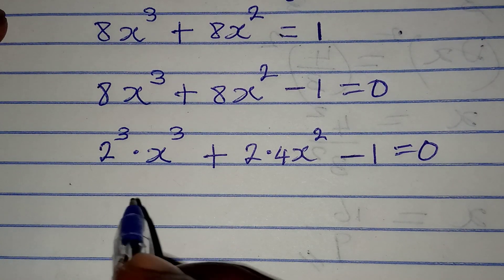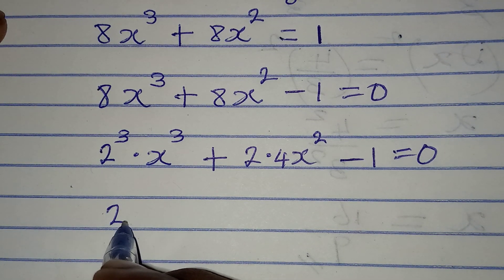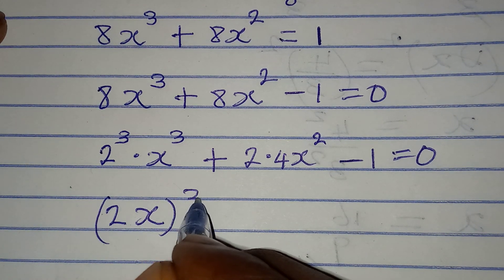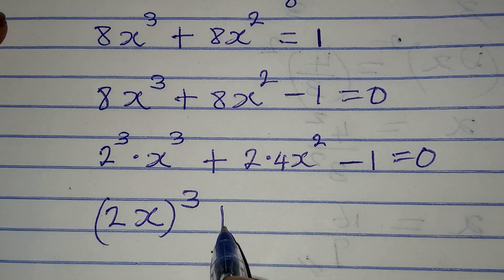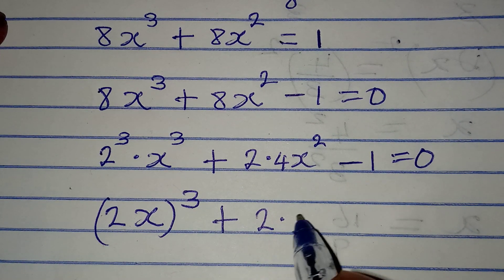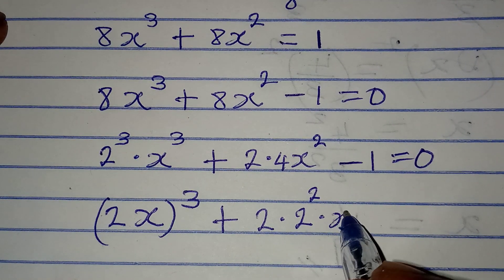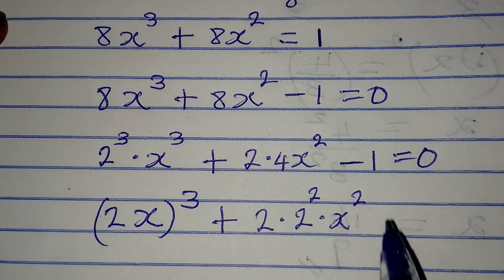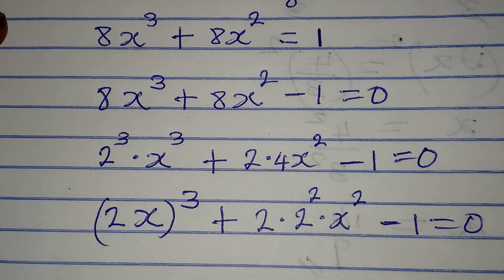So I will have 2 times x to the power of 3 because they are having the same power. We can combine them, then I'm going to have 2 multiplied by 2 to the power of 2 multiplied by x to the power of 2, because 4 there is 2 squared. Then minus 1 equals 0.